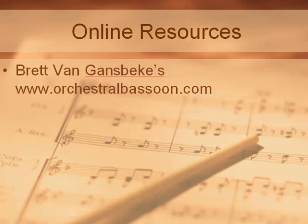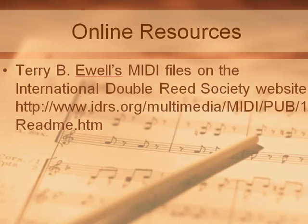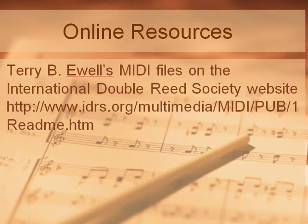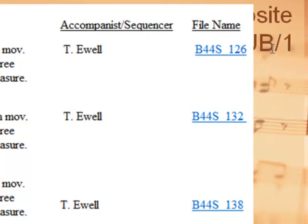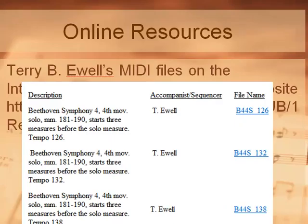Having visited Brett's site, it's time to move on to several materials that I've prepared. There are many MIDI files that I've prepared that are now housed at the International Double Reed Society website. These MIDI files allow you to play along with an accompaniment at various tempos. For instance, for Beethoven's Fourth, we have three tempos set up here: 126, 132, and 138. You can practice at these various tempos in order to master it and really get a sense of what the orchestral accompaniment is like when you're performing. There are many important excerpts there that you can work with using MIDI files.